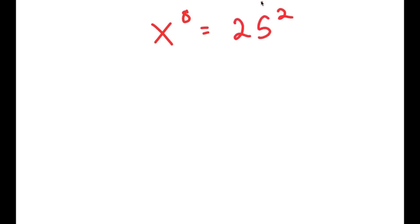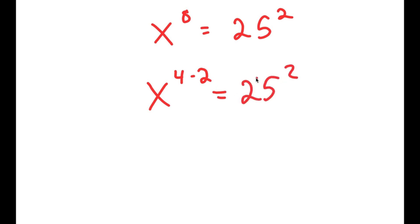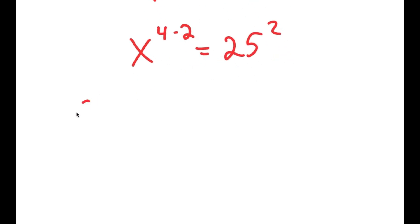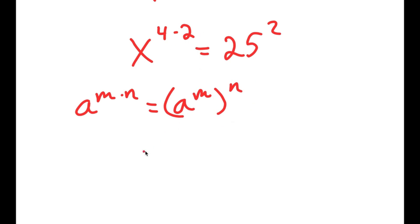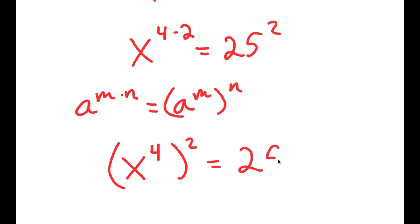In this next problem, I'm going to solve the equation x to the power of 8 is equal to 25 squared. To solve this, I'm going to first rewrite this as x to the power of 4 times 2 is equal to 25 squared. Using the rule that a to the power of m times n equals a to the power of m to the power of n, x to the power of 4 times 2 becomes x to the power of 4 to the power of 2, and this equals 25 squared.